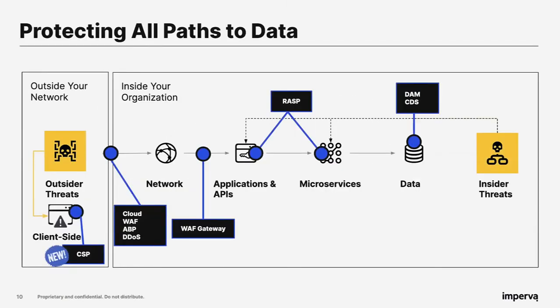To understand where Client-Side Protection fits within the Imperva world: logically, you can see where Cloud WAF, Advanced Bot Protection, DDoS, WAF Gateway, RASP, and Database Activity Monitoring all sit — and CSP is way outside on the client side. One important dependency: you do need Cloud WAF for Client-Side Protection to function, so the Cloud WAF must be deployed first.